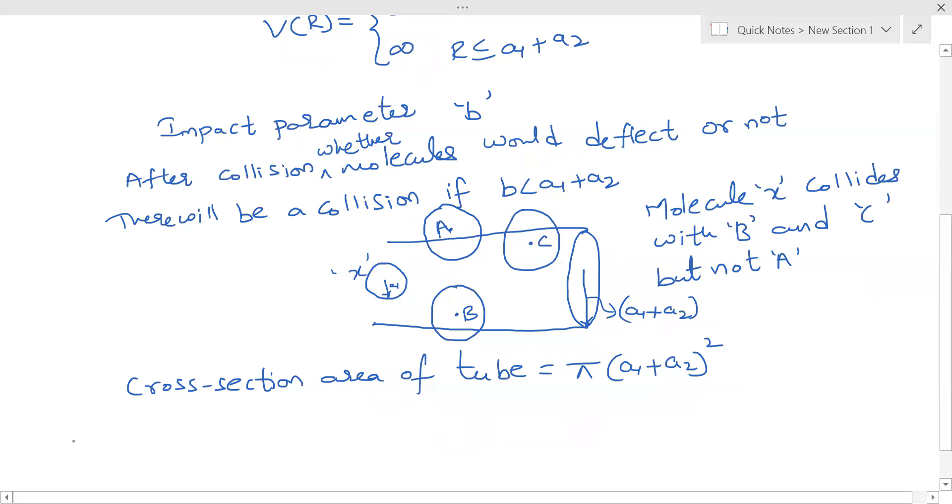The area of the cross section area of the tube is called the collision cross section.